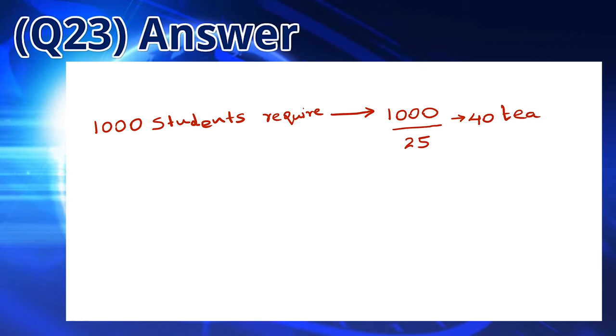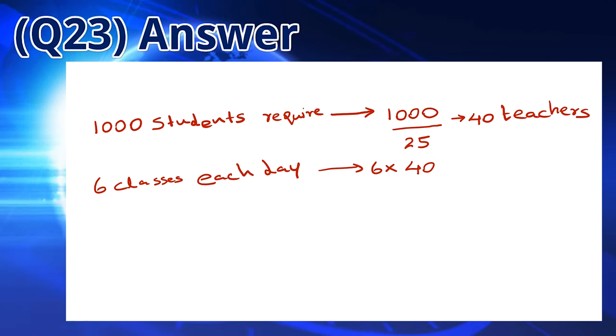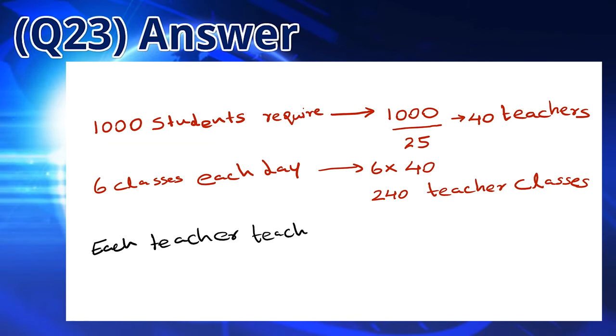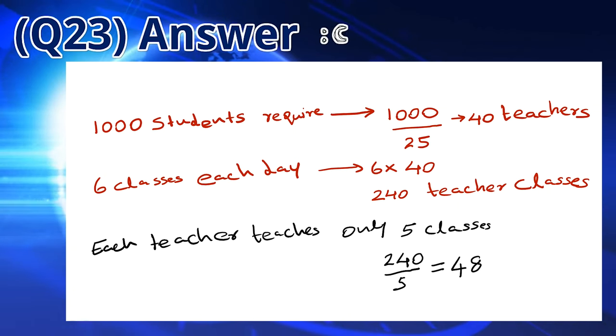For each class, the 1000 students require 1000 divided by 25, which is 40 teachers. There are 6 classes. So the students will need 40 multiplied by 6, which is 240 teacher classes. Each teacher teaches only 5 classes each day. So we need 240 divided by 5, which is 48 teachers. So the answer is B.